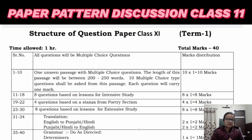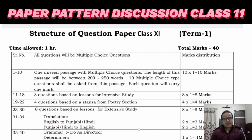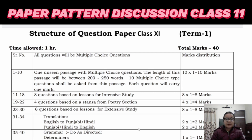Then questions 35 to 40 will be grammar — 'do as directed' type. The grammar topics include: determiners (one mark), modals (one mark), use of the same word as noun, verb, and adjective (two marks), use of 'too' (one mark), and removal of 'too' (one mark). I hope you have understood this paper pattern.